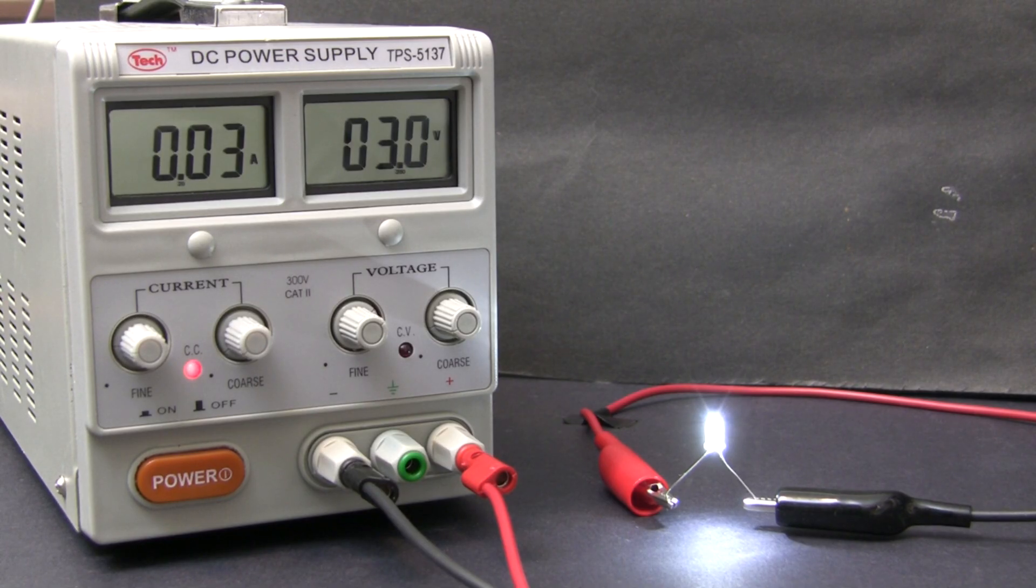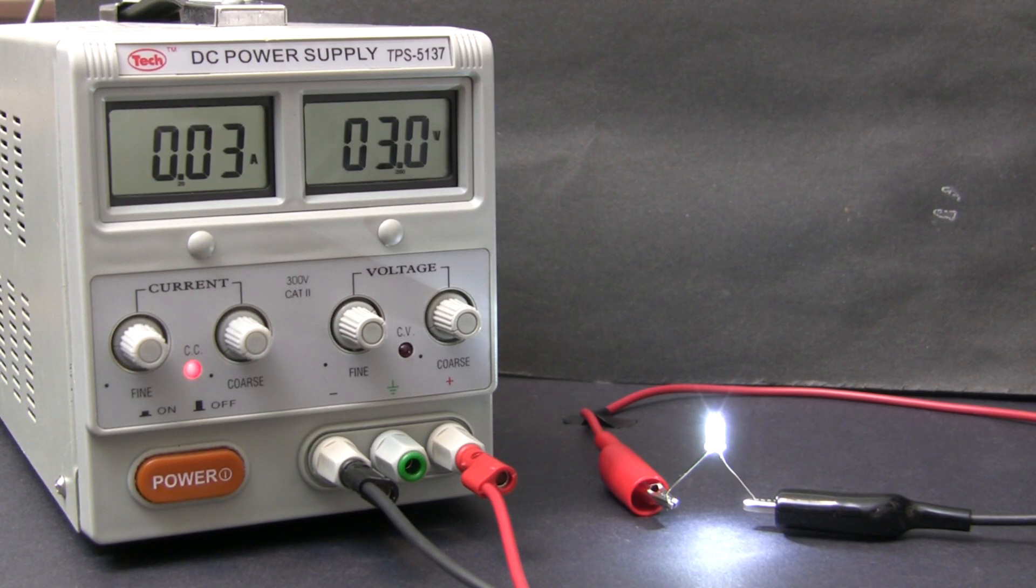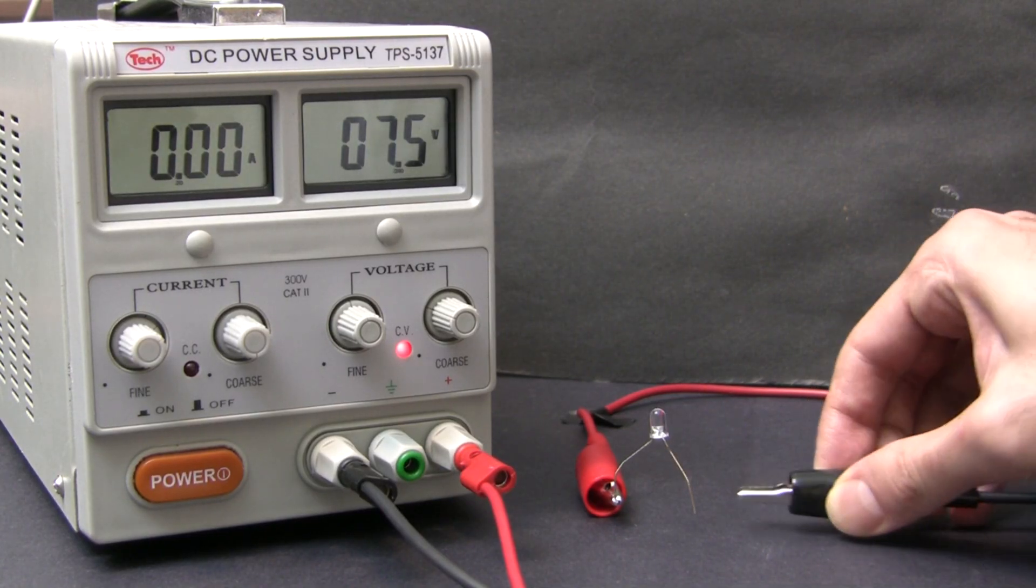Let's talk about the maximum current limit of LEDs. In this example, I was using a special feature of my power supply to limit the current going through the LED to a maximum of 30 milliamps, which is about as much as this LED can handle. But what happens if I take my foot off the brakes? I'm going to set the power supply to 7.5 volts, and I'm going to remove all current limits. Let's see what happens.